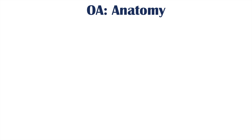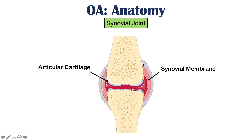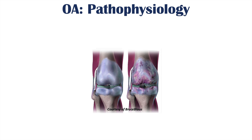Before discussing pathophysiology, it's important to understand the anatomy of the affected joints. Synovial joints are the type affected in osteoarthritis. A synovial joint contains articular cartilage that covers the ends of the bones forming the joint, a synovial membrane that produces synovial fluid acting as a lubricant, and an outer fibrous capsule. Together, the synovial membrane and fibrous capsule make up the articular capsule.